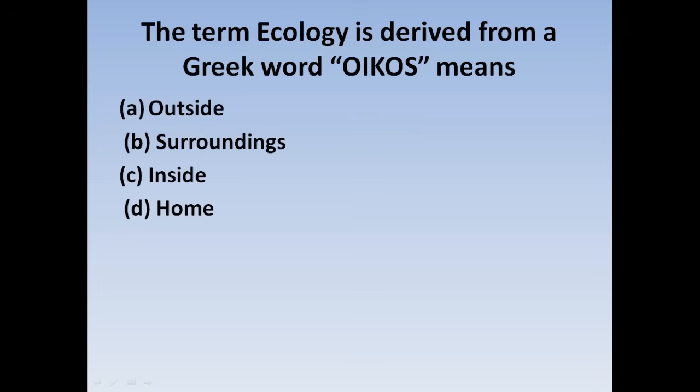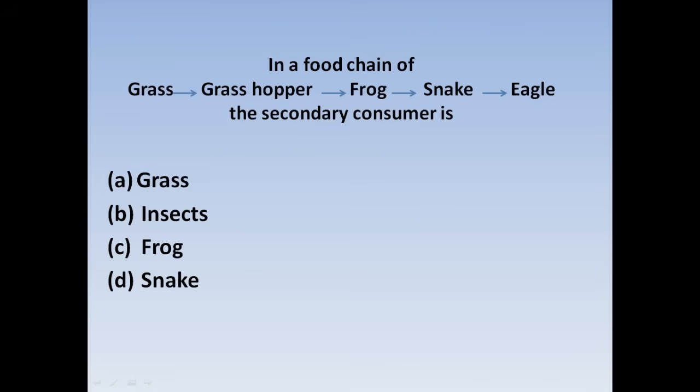Next question: The term Ecology is derived from a Greek word. Oikos means — Option A: Outside, Option B: Surroundings, Option C: Inside, Option D: Home. The term ecology comes from oikos. Oikos means home. So Option D, home, is the correct answer.